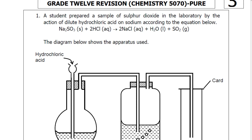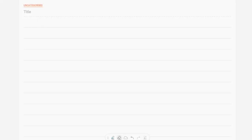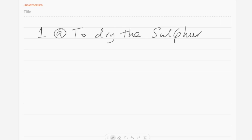The question is: what is the purpose of the sulfuric acid? As we all know, sulfuric acid is used as a drying agent in industry. So the purpose of sulfuric acid in this laboratory experiment is to dry the sulfur dioxide gas.